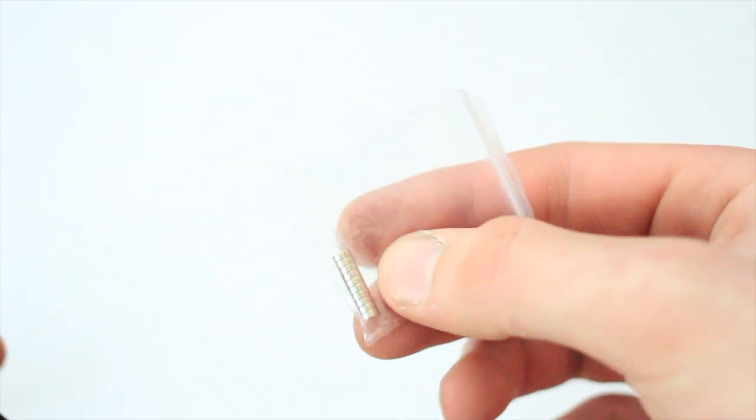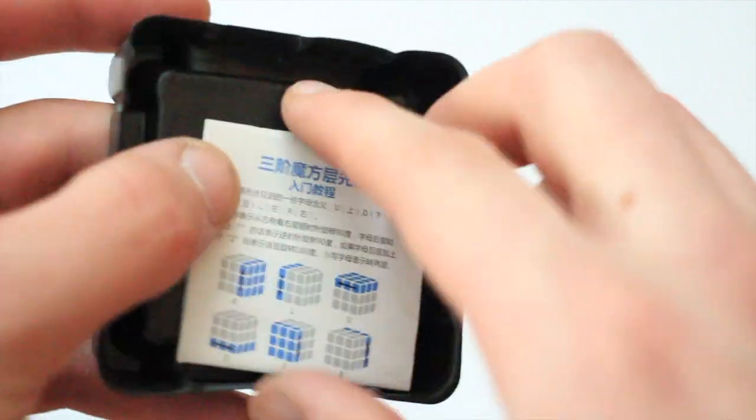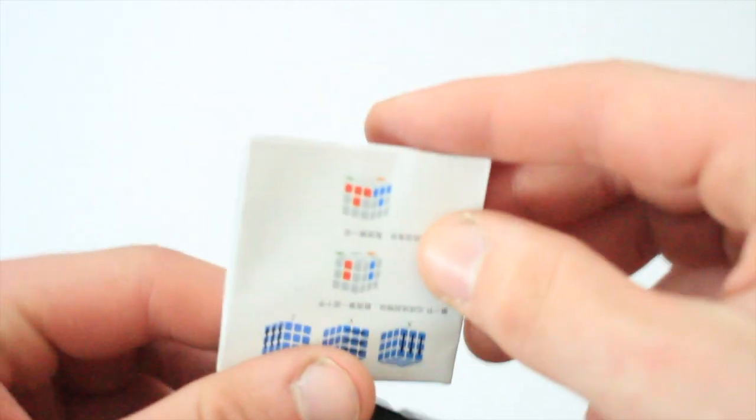At the bottom of the box, we've got the extra magnets in case the magnets fall out, and a quick pamphlet about some algorithms.